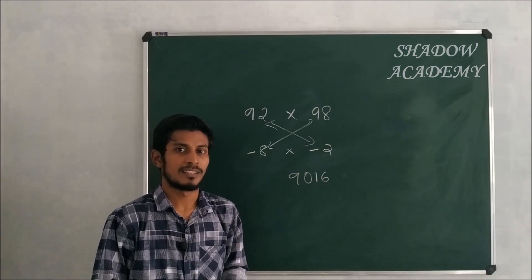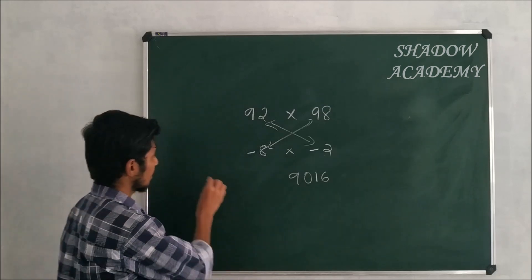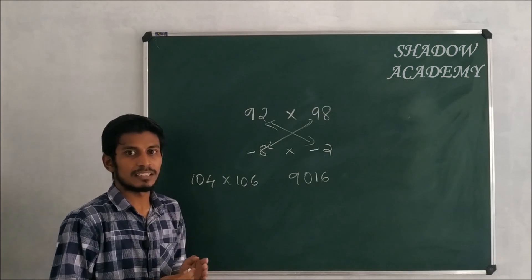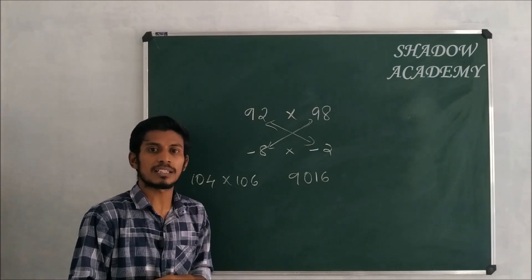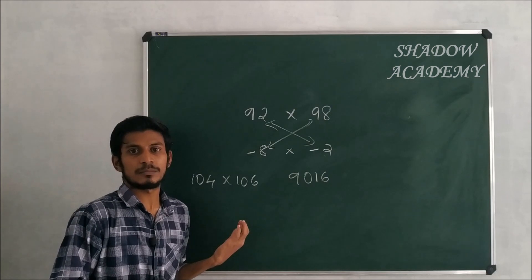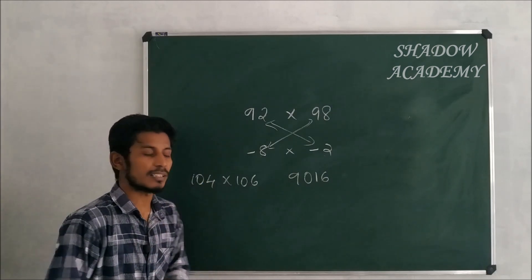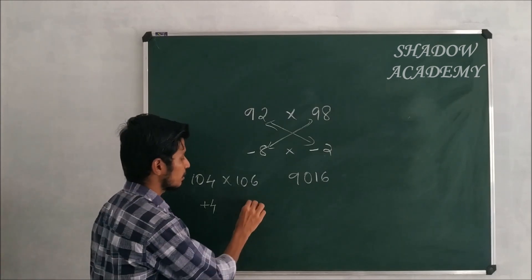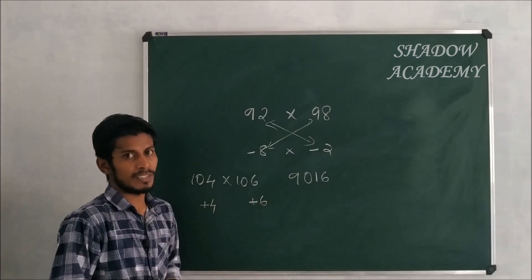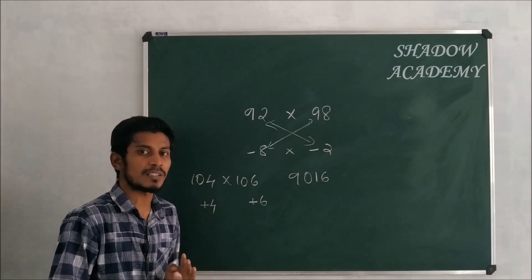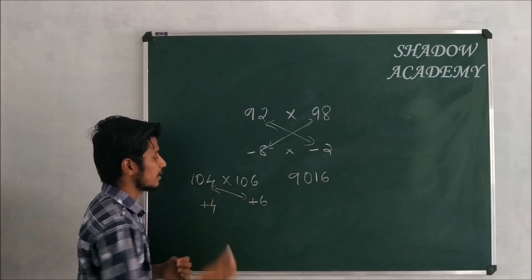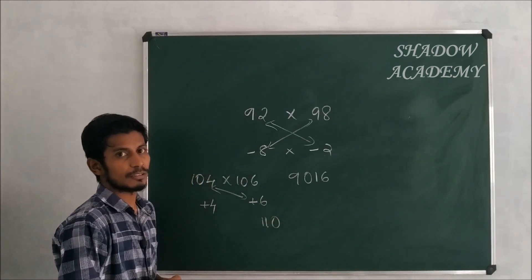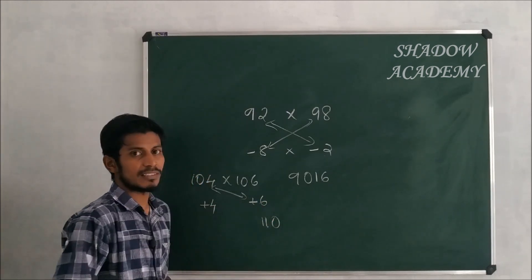One more example: 104 × 106. We compare to base 100. 104 is plus 4, and 106 is plus 6. Cross-add: 104 + 6 = 110, then multiply by 100 to get the left part. Then 4 × 6 = 24. So the answer will be 11024.